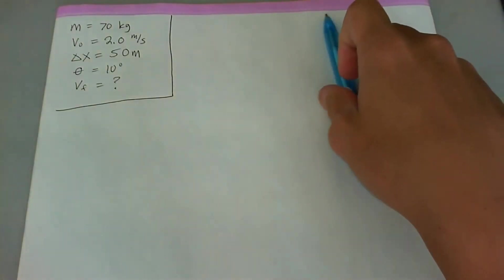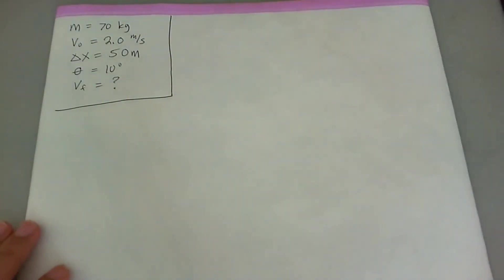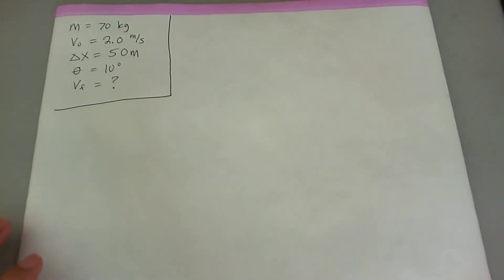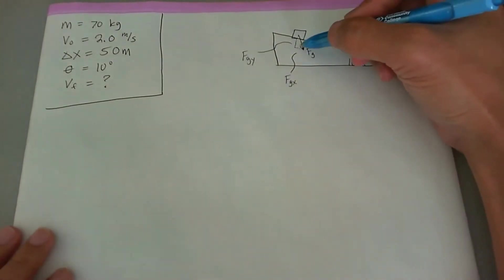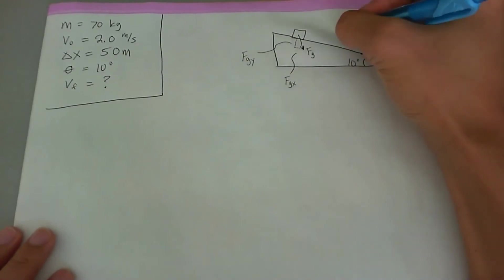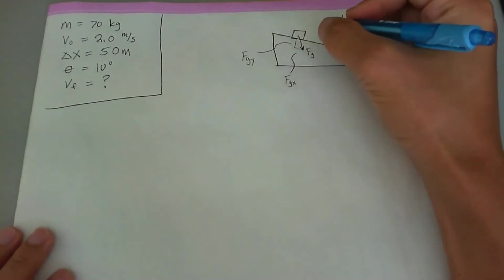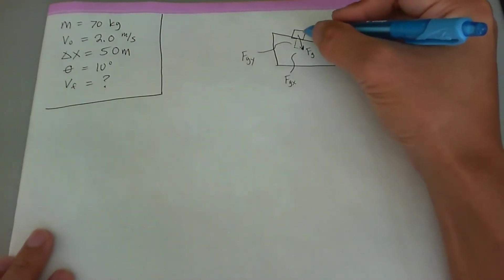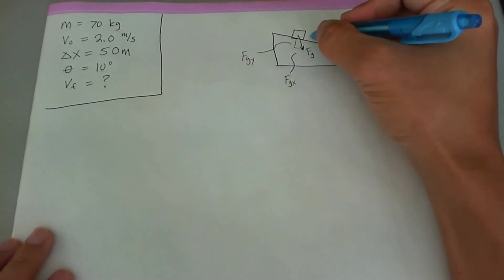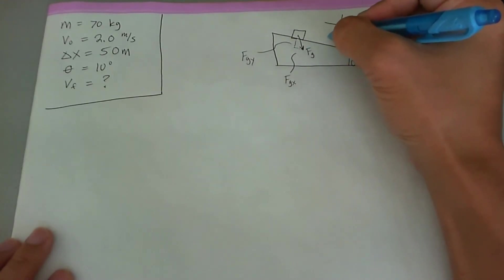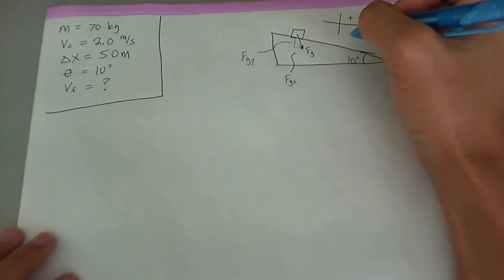Since we haven't talked about a proper conservation law yet, we're going to work with the work-energy theorem to solve this problem. The force of gravity in the x-direction, with a tilted coordinate system, is the component of force doing work on this skier — it's the only component making the skier go down the slope, so that's what goes into the work equation.